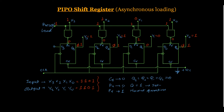We apply the 4-bit binary number simultaneously (in parallel) and simultaneously we can read this data in parallel from the shift register. Therefore it is known as a Parallel In, Parallel Out shift register. The advantage of asynchronous loading is that you don't require any clock pulse — without a clock pulse you can transfer your data into the shift register, so the required time period is very small compared to Serial In Serial Out or Serial In Parallel Out shift registers.